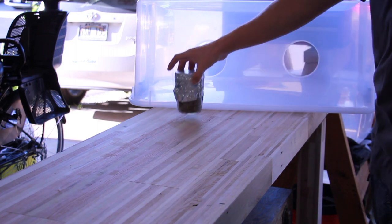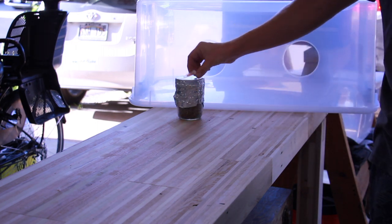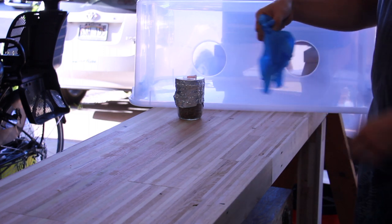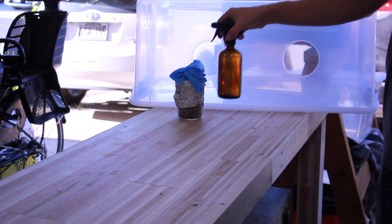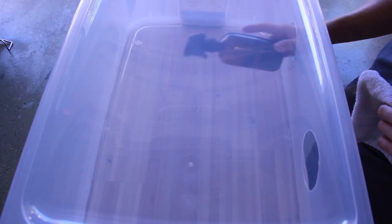The items I'll be using today are a jar of sterilized rye grain, my wedge of lion's mane that's grown on agar, some gloves to keep my hands clean, and a spray bottle of alcohol. One thing I forgot to picture is a rag that I'll be using to wipe the inside of the box.